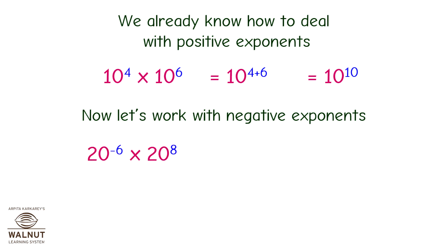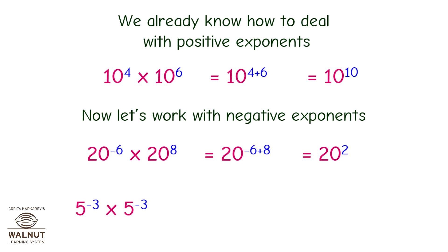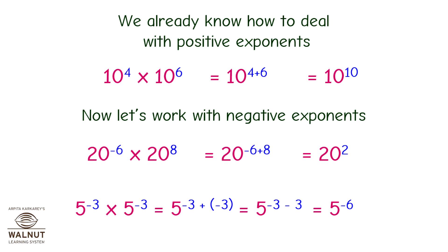Now let us work with negative exponents. 20 raised to minus 6 into 20 raised to 8 is equal to 20 raised to minus 6 plus 8, which is equal to 20 raised to 2. 5 raised to minus 3 into 5 raised to minus 3 is equal to 5 raised to minus 3 plus minus 3, which equals 5 raised to minus 6.